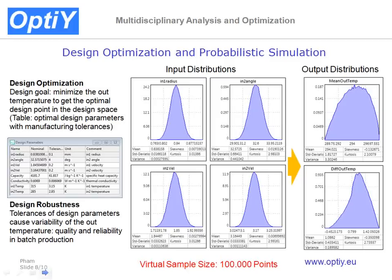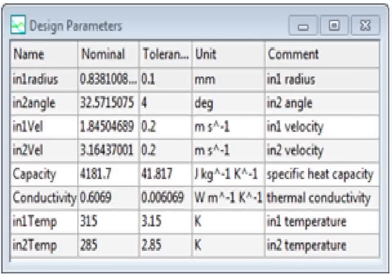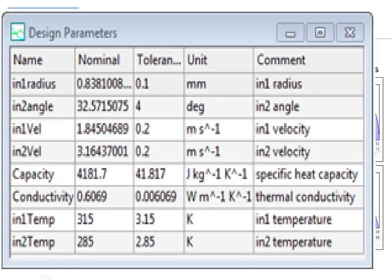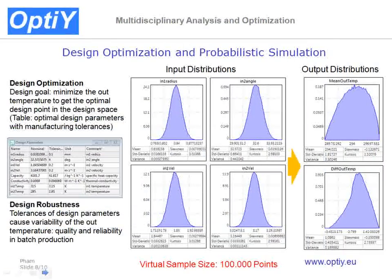With the response surface, we do a design optimization to get the optimal nominal values of the design parameters. Based on this design point, we do a Monte Carlo simulation to evaluate the design robustness and reliability. We use a virtual sample size of 100,000 points. With the distribution of the design parameters, we get the distribution of the design goal — the mean temperature and the differential temperature of the water at the outlet pipe.